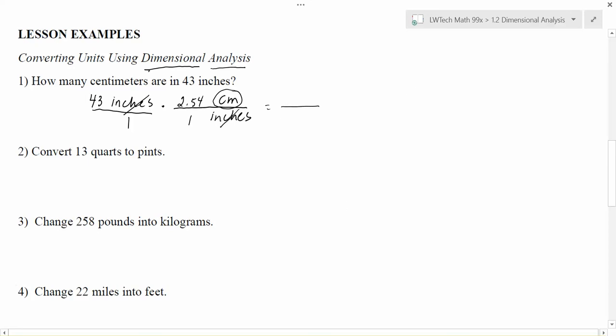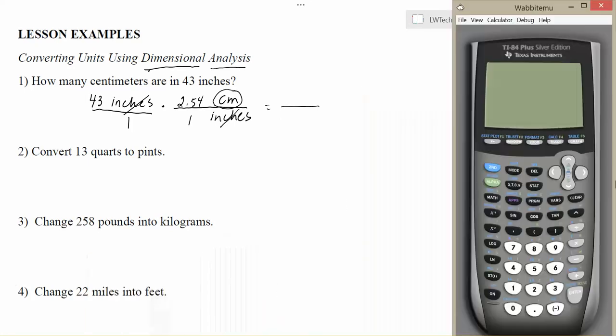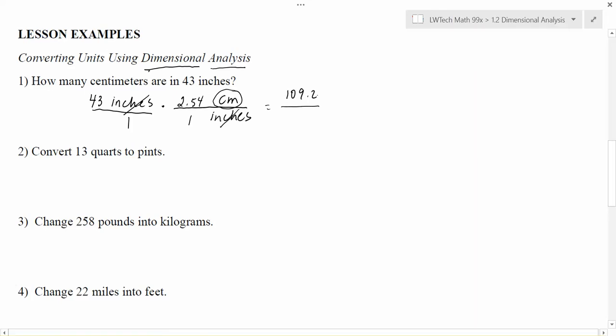Now, if you remember our rules for multiplying fractions, we multiply across the top and we multiply across the bottom. I have to do 43 times 2.54. That gives me a solution of 109.22 on the top. And then one times one gives me one on the bottom. And remember that a fraction bar also means divide. So I can divide 109.22 by one and I get 109.22. And the only unit that was left remaining after the inches canceled was centimeters. And so that's a way that I can set up my conversion fraction.